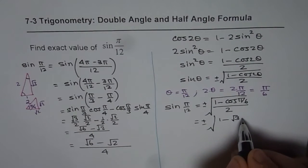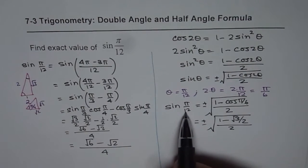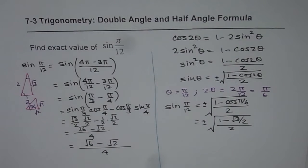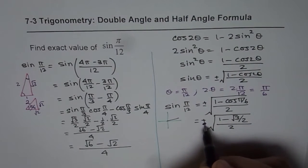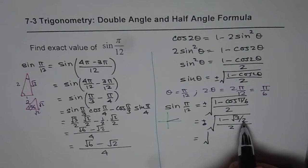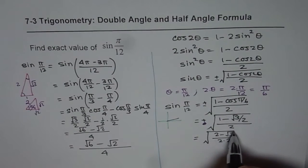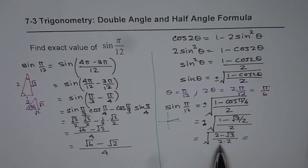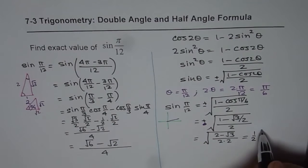We get √(√3/2 / 2). Since π/12 is in quadrant 1, we take the positive value. So we write this as √((2 - √3)/4), which simplifies to (1/2)√(2 - √3).